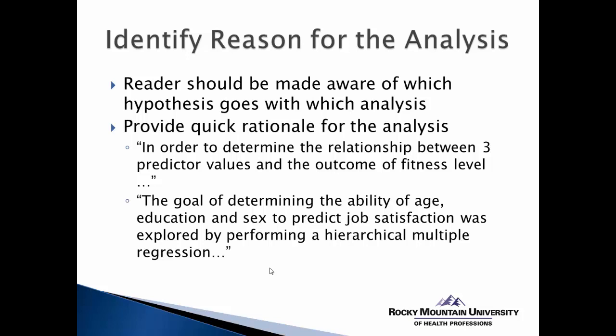Here are a couple of examples. In order to determine the relationship between three predictor values and the outcome of fitness level, or the goal of determining the ability of age, education, and sex to predict job satisfaction, was explored by performing — and so this way, we give the reader an idea of what the goal of the analysis is, what hypothesis it is we're attempting to answer, and then they can judge whether or not this was an appropriate way to reach that goal.